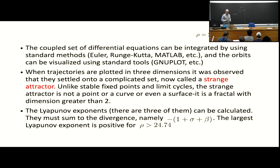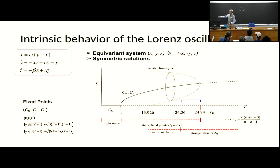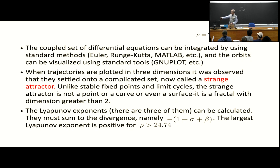The Lyapunov exponents can be calculated for this system. As I asserted yesterday, there are three of them. The three come because there are three equations of motion. This entire system starts out in R³, then there is an attractor and it brings you down to zero volume. You can see that the divergence of the vector field is just minus sigma minus one minus beta. The sum of those three terms is the divergence, and in a theorem proved long ago, the sum of the three Lyapunov exponents has to equal that.